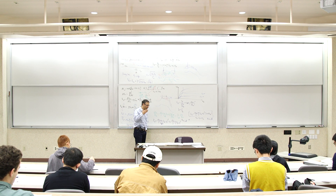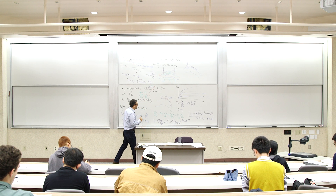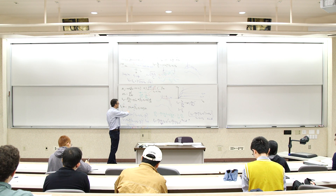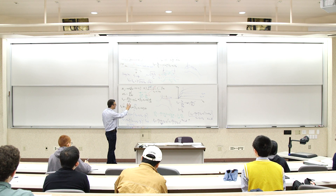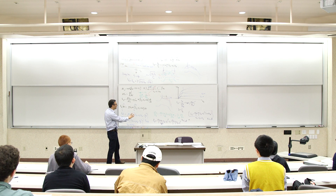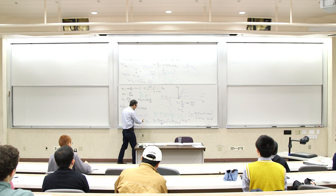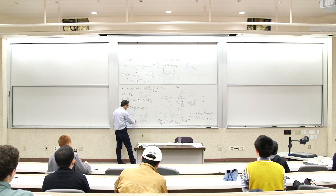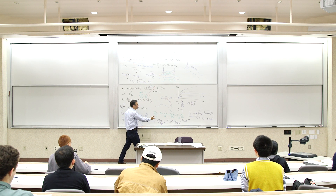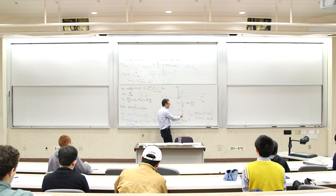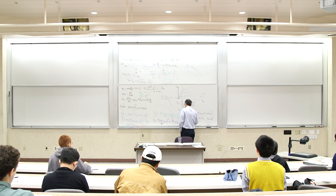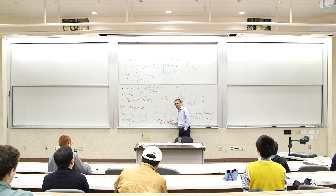Alright, so before the break we developed the classic quadratic model for the transistor current. We saw that there's a triode region and then there's a quadratic region. This is basically what we call the classic long channel MOSFET model.